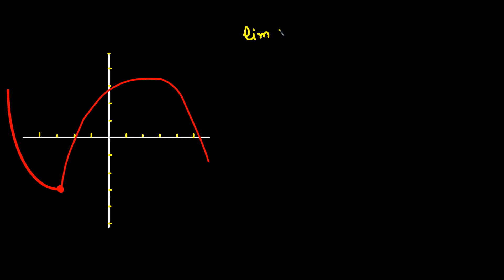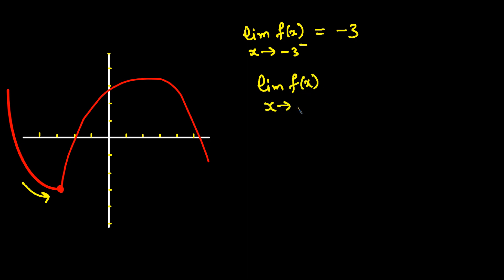Let's do the last example. We have a solid dot and a closed circle. The limit of the function as x approaches negative 3 from the left — going to this point — gives a value of negative 3. The limit as x approaches negative 3 from the right, coming from this side, also gives negative 3. Since both match, the limit exists.